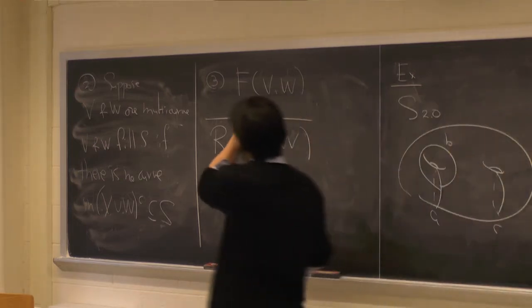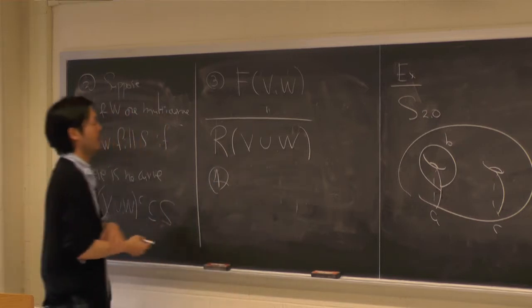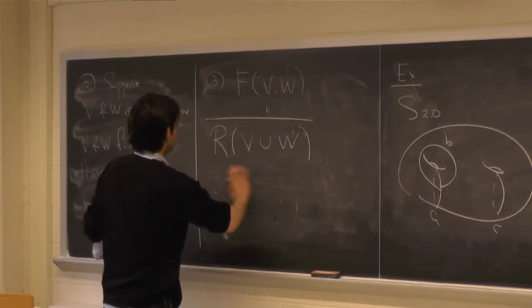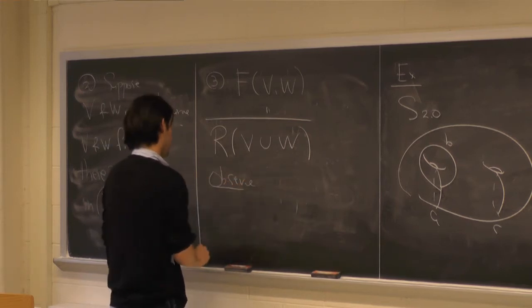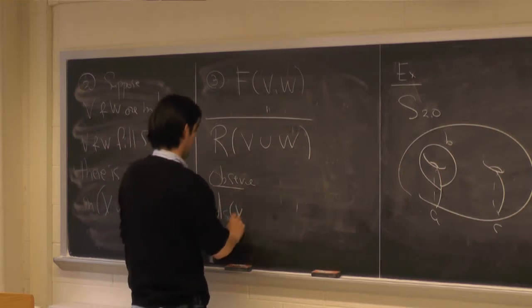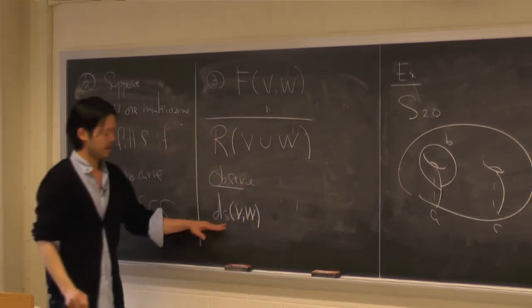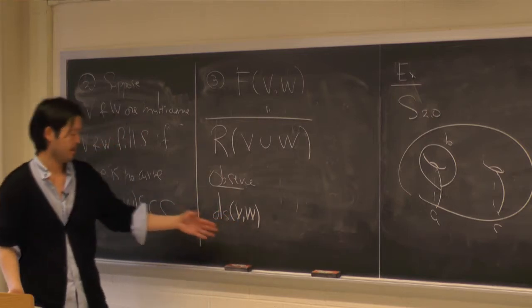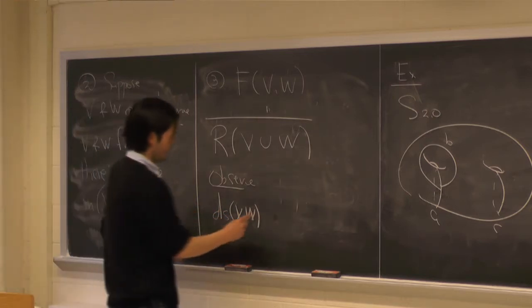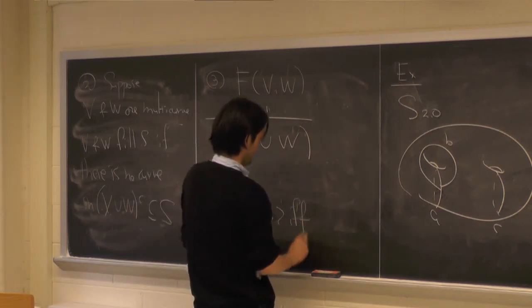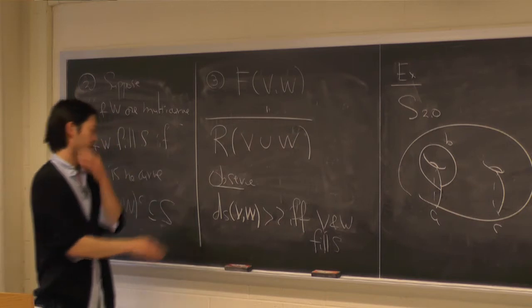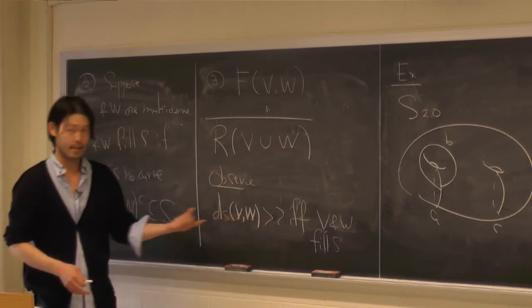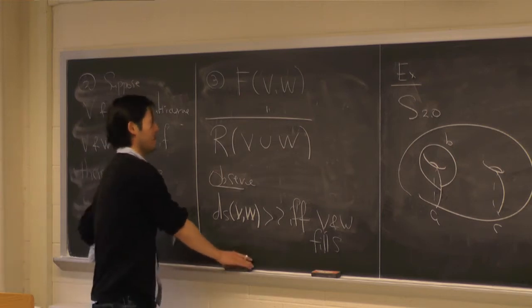Let's observe a few things. Denoting the diameter of V and W in the metric on the curve complex, this is bigger than 2 if and only if V and W fill. Because if they weren't, for example, if those two curves are distance 2 apart, then we found a curve that's not intersecting both of them.